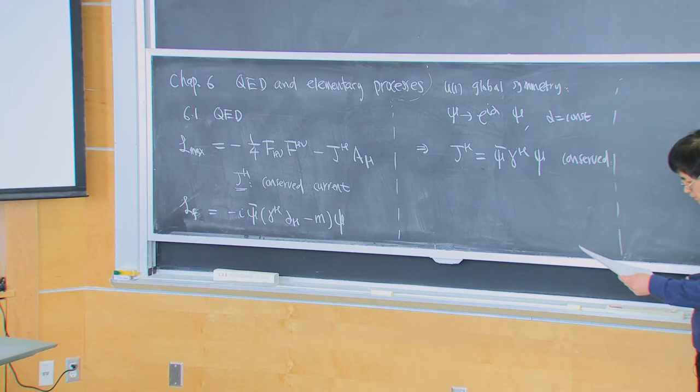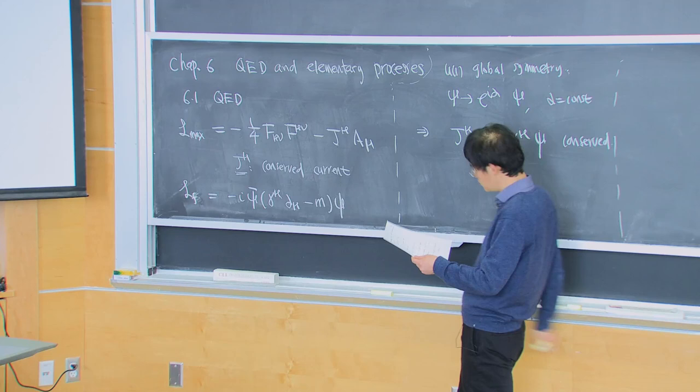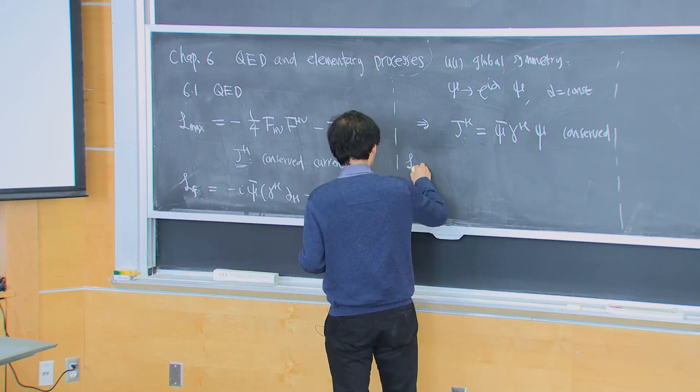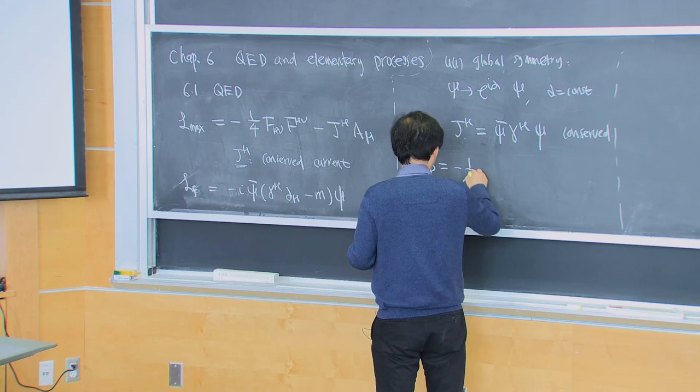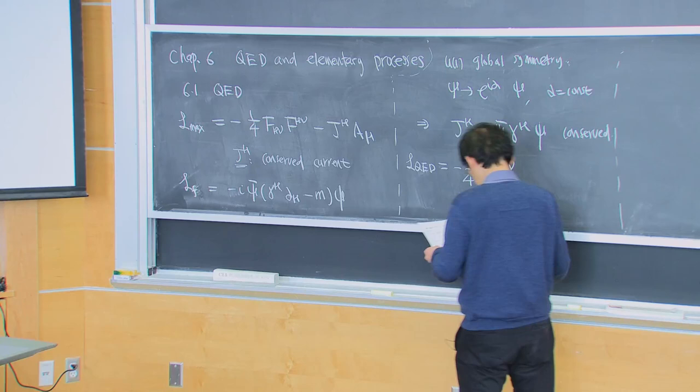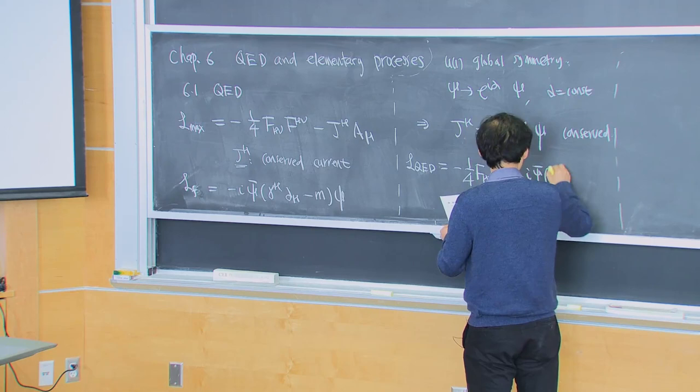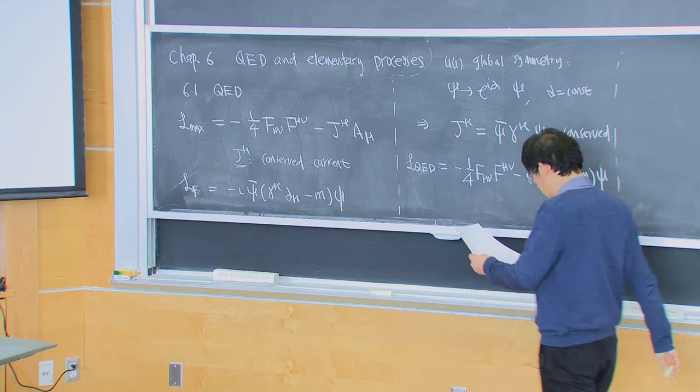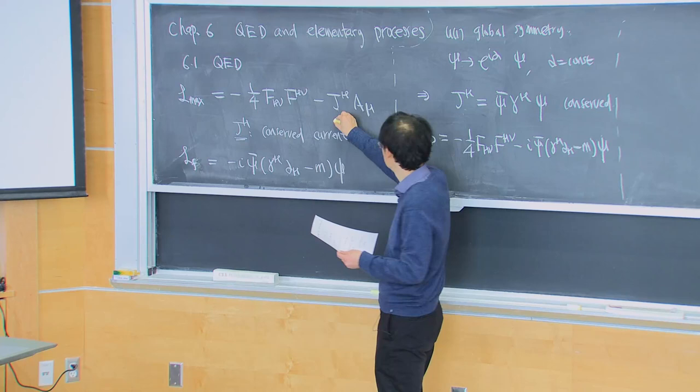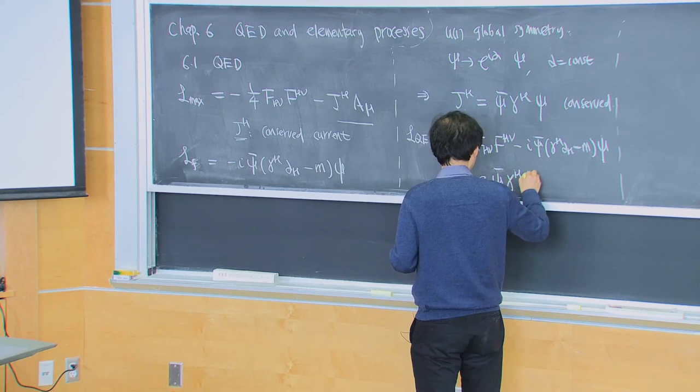So now if we want to couple the fermions to the Maxwell field, it is natural to identify this J_mu with this J_mu, because here we need a conserved current and here we have a conserved current. So it is natural to write down the theory replacing that J_mu with this J_mu — that is why I used the same notation. This gives us the Lagrangian for QED: the Maxwell term (free photon) plus the free fermion, with the fermion and photon coupled together through this term.